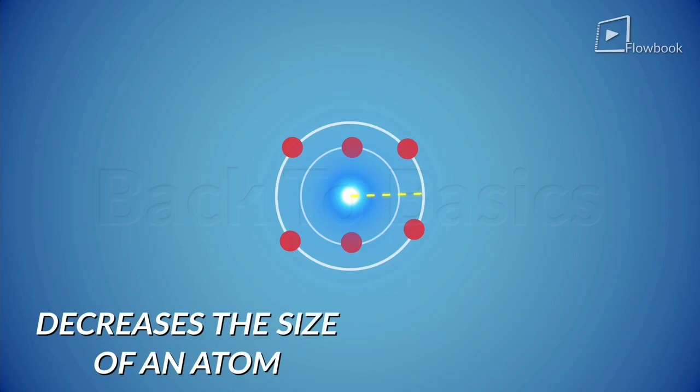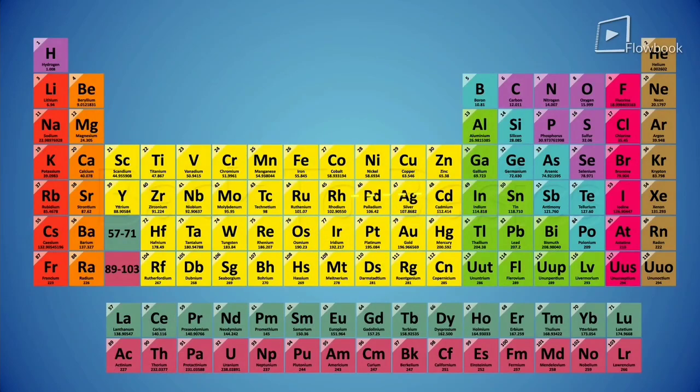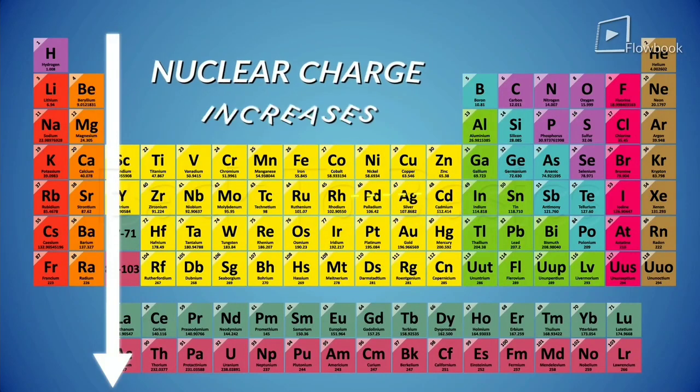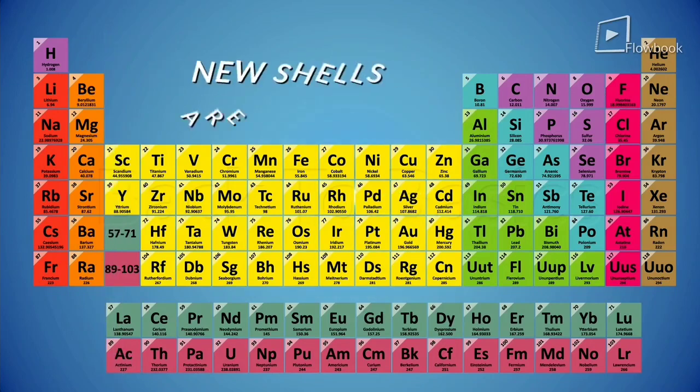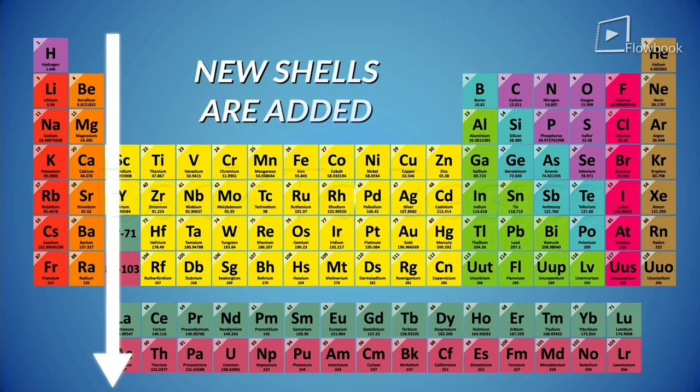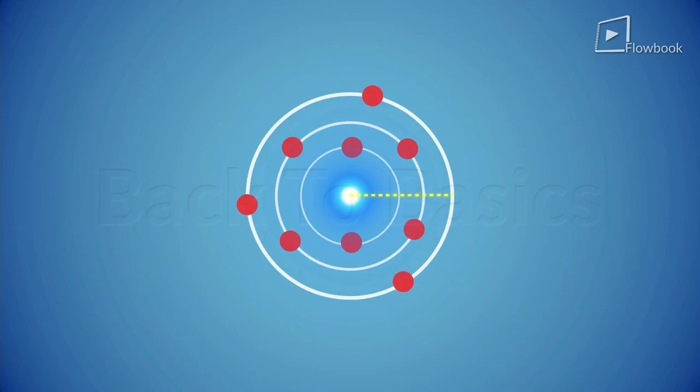But wait a minute, even in a group as we go down from top the nuclear charge increases. But in a group, along with the nuclear charge, new shells are added as we go from top to bottom. These new shells increase the distance between the nucleus and the outermost shell. And that's why the atomic size increases as we go down the group.